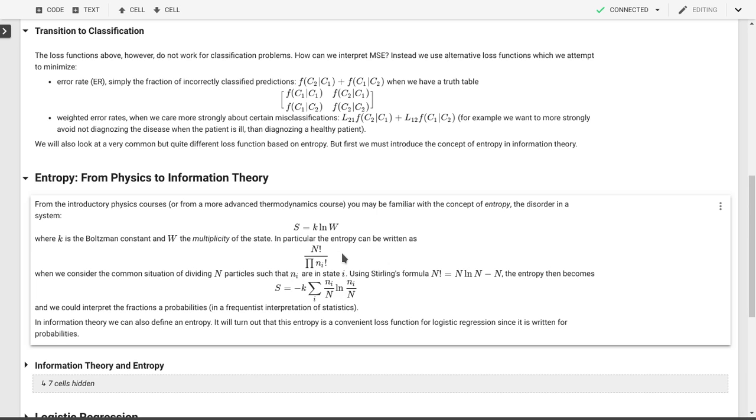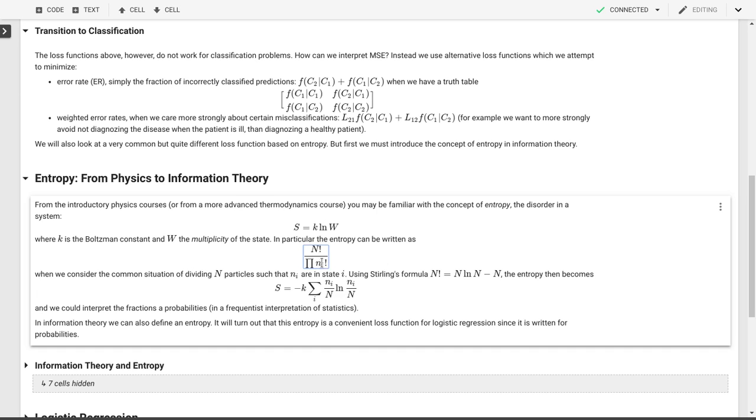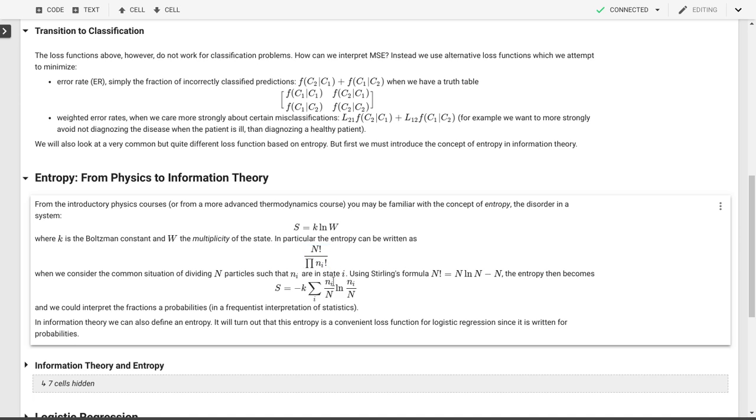So we can use this expression for the multiplicity together with Stirling's formula to turn this into a different expression. So our n factorial here will become n log n minus n, the little n factorials will become that as well. Since we have a logarithm of a product we can turn this into a sum over logarithms of this little n factorials and ultimately we're going to end up with minus k, minus because we're turning the product in the denominator into a numerator.